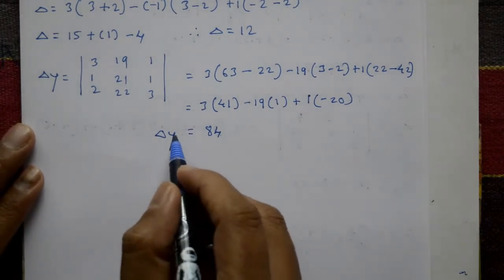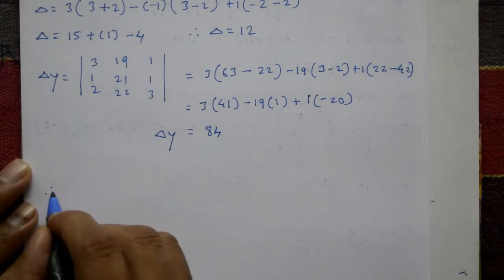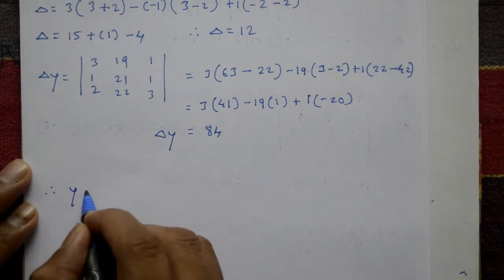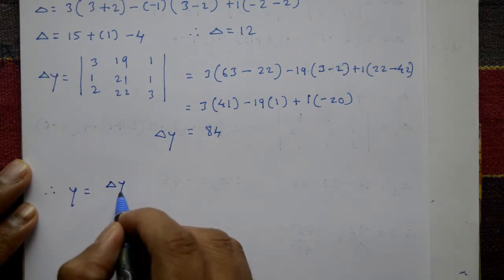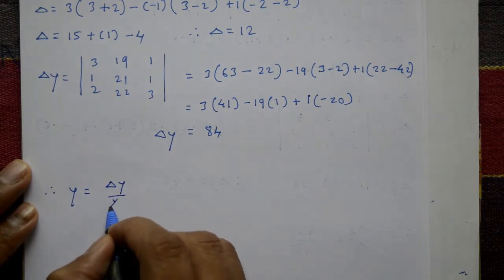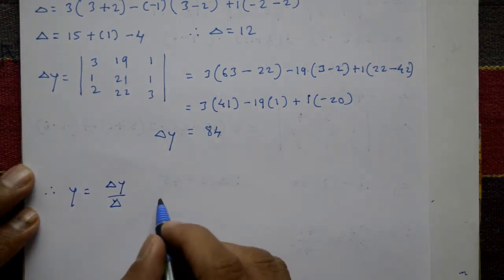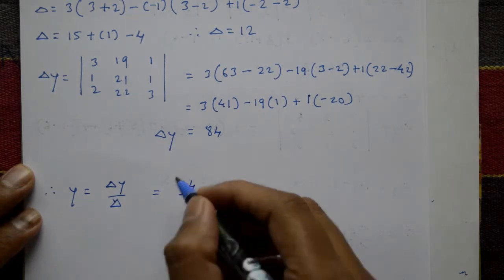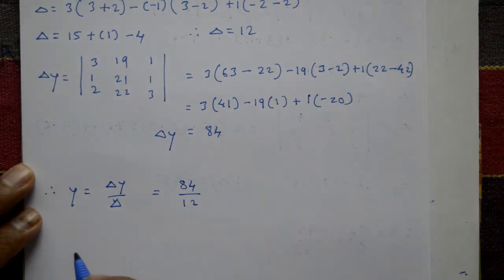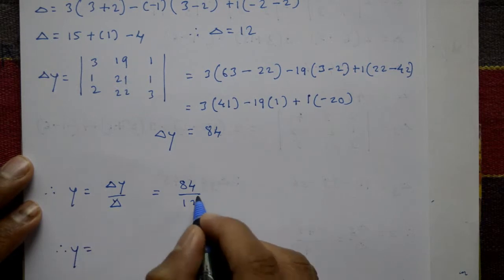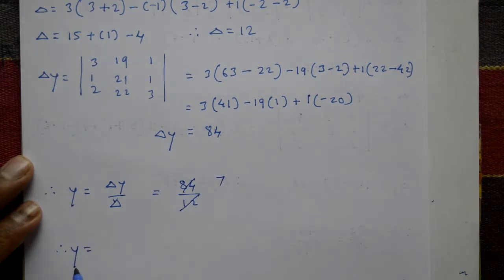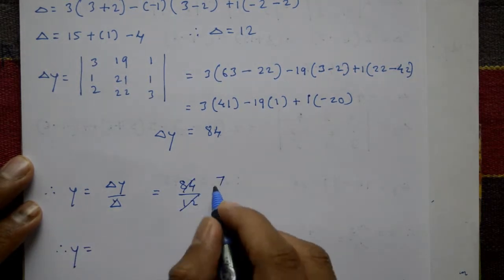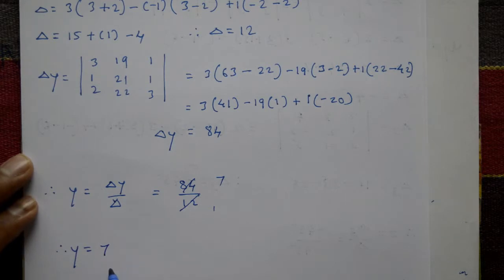Therefore, y equals Delta y divided by Delta. Delta y is 84 and Delta is 12. Simplifying: 84 divided by 12 equals 7. So y equals 7. This is the required y value.